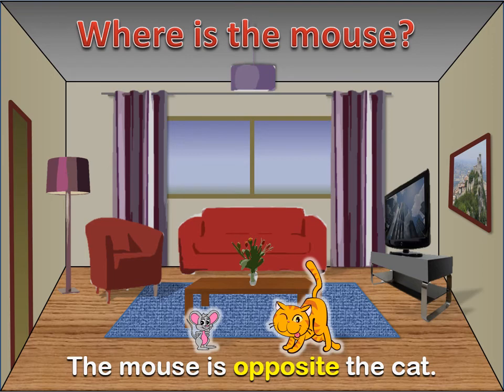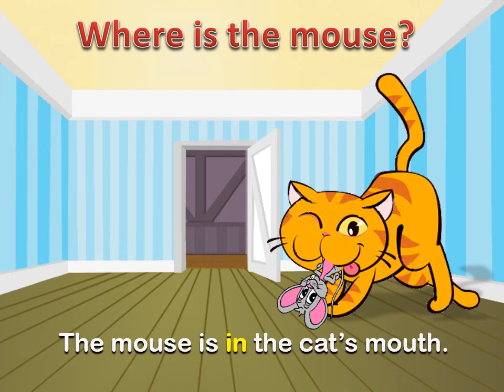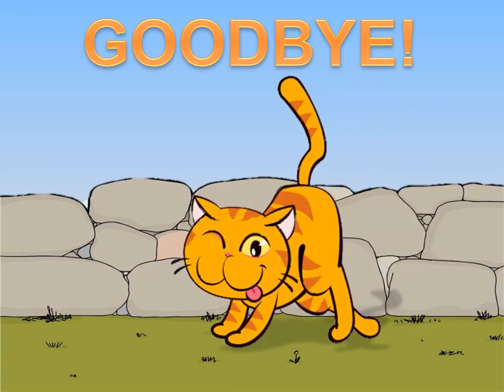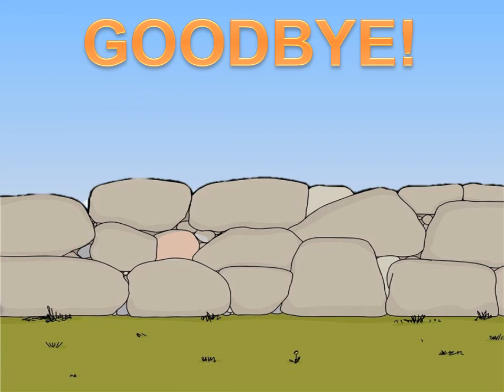Can you believe it? The mouse is opposite the cat. Oh, I feel sorry for the mouse. He is in the cat's mouth. Wow, the mouse managed to run away. But the cat is following him again. It never ends. Well, we finished our lesson for today. I hope you enjoyed it. Goodbye.